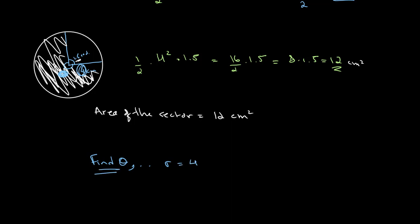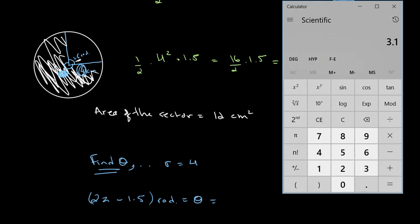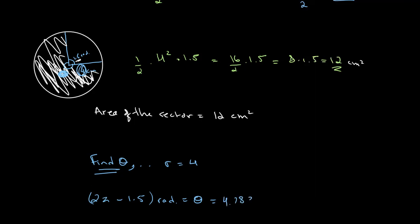To find theta, we use our knowledge of radians. Since the known angle is 1.5 radians and a full revolution is 2π, we simply subtract: 2π minus 1.5 radians equals theta. This gives us approximately 2 times 3.14159 minus 1.5, which equals approximately 4.7832 radians.